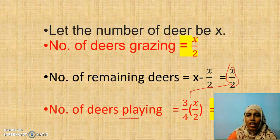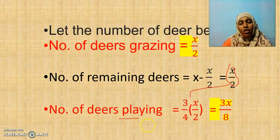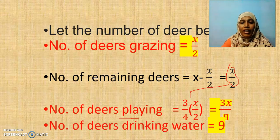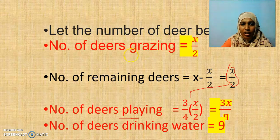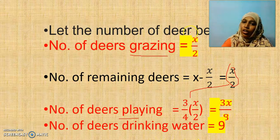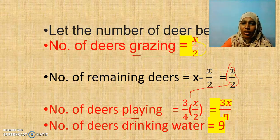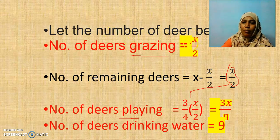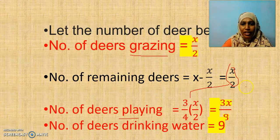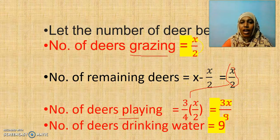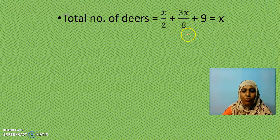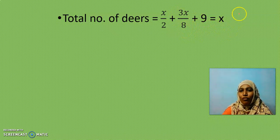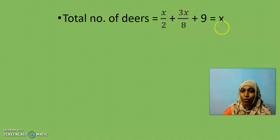Now, how many deers are drinking water? There are nine deers drinking water. So grazing, how many deers are grazing? x by 2. How many deers are playing? 3x by 8. How many deers are drinking water? Nine. Totally, how many deers are there? There are x number of deers. Hope you will be able to frame the equation now. If I add these three types of deers, I will get the total number of deers to be x. We got the equation as x by 2 plus 3x by 8 plus 9 is equal to x. Don't you feel the beauty of math? Here also we have x. Here x. Again, it is equal to x. That's the beauty, children. You should know to enjoy the beauty of math.